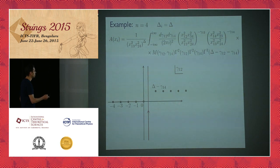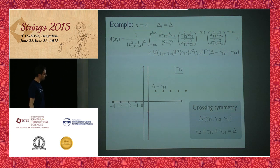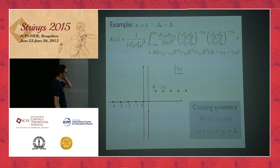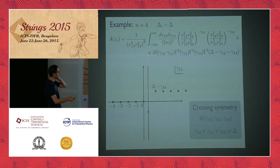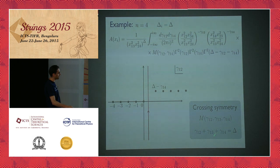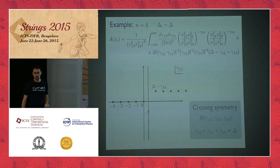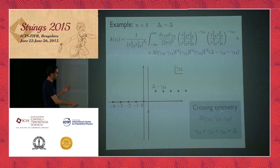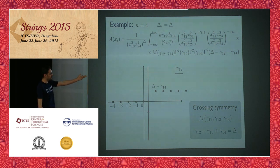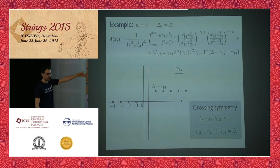From this, you already see some hint of similarity with scattering amplitudes. If you think of this function as a function of three variables with one constraint, the permutation symmetry of the original correlation function just corresponds to permuting these three variables. This is analogous to writing a scattering amplitude as a function of Mandelstam invariants s, t, and u, with a constraint and permutation from crossing symmetry.